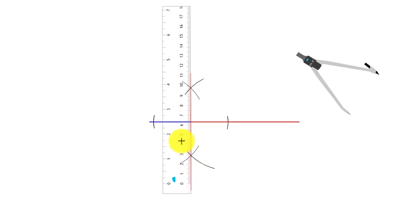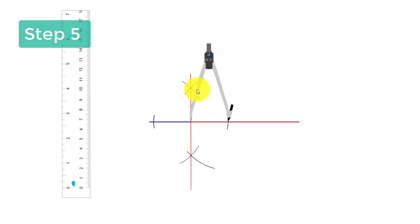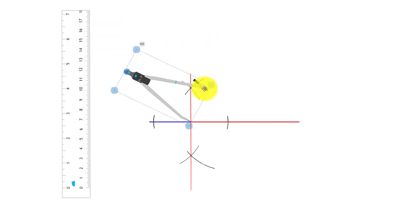We have constructed a perpendicular which passes through this point. Now place the compass here and cut a 4 centimeter arc. This is the second side.